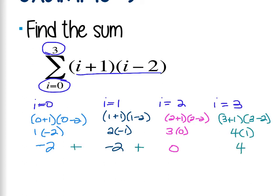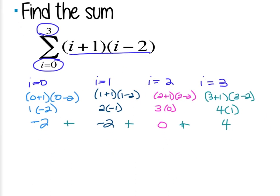And at the end, we're going to add up all these numbers together. So I get negative 2 plus negative 2, that's negative 4, plus 0 is negative 4, plus 4 is 0. So the summation is actually 0 for this example.